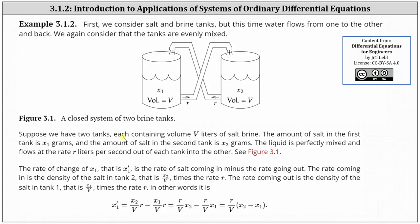Suppose we have two tanks, each containing volume V liters of salt brine. The amount of salt in the first tank is x1 grams, and the amount of salt in the second tank is x2 grams. The liquid is perfectly mixed and flows at a rate of r liters per second out of each tank into the other.